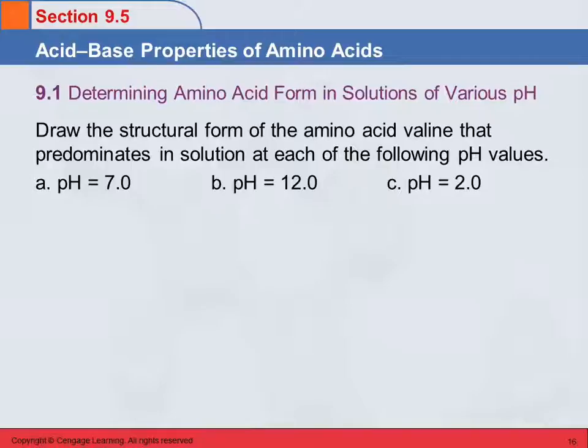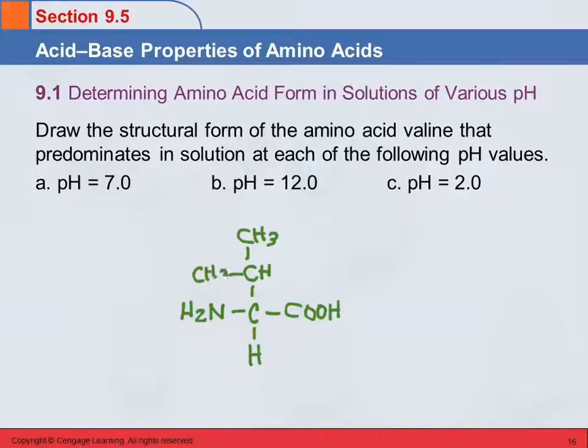So this question is asking us to draw the structural form of the amino acid valine that predominates in solution at each of the following pH values. So this is where our little table will be handy. Let's find valine. And I'm just going to draw it as it shows up on the table. And notice, as they're drawn here, they are not in the Fischer projection form. And there's a good reason for that we'll talk about later. Okay, so there's valine, the structure of valine.